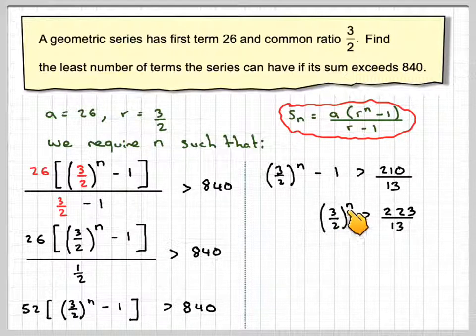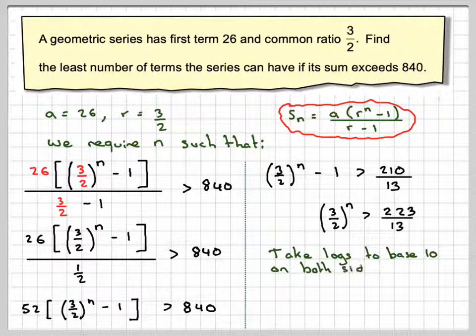So we've got an unknown power here. So we have to take logs on both sides. We take log to the base 10 on both sides.